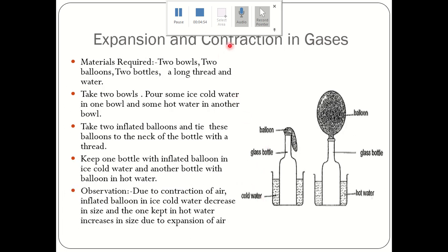The next experiment is to understand how expansion and contraction occur in gases. The materials required are two bowls, two balloons, two bottles, a long thread, and water. We will pour ice cold water in one bowl and hot water in another. We will take two inflated balloons and tie them to the necks of the bottles with thread. Keep one bottle with its inflated balloon in ice cold water and another in hot water.